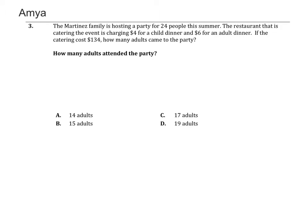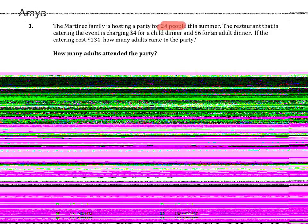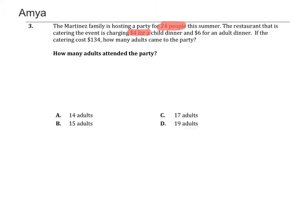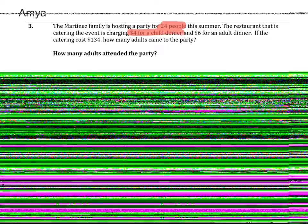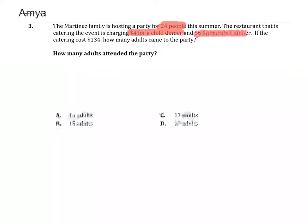The Martinez family is hosting a party for 24 people this summer. The restaurant that is catering the event is charging $4 for child dinner and $6 for adult dinner. If the catering costs $134, how many adults came to the party?